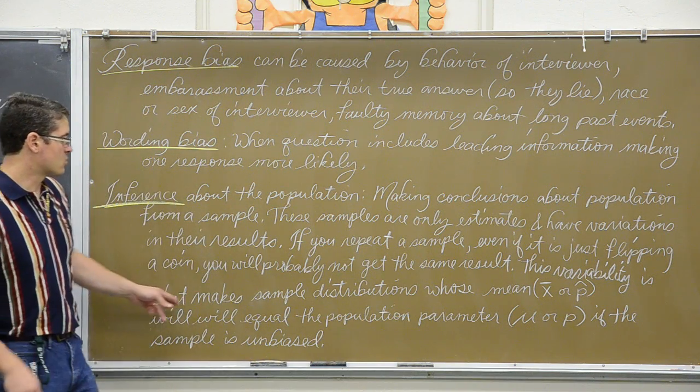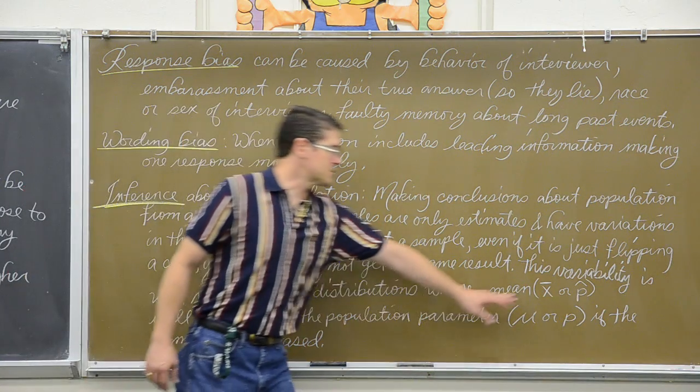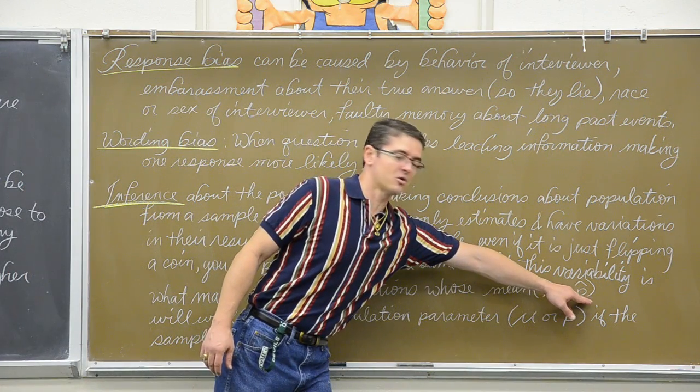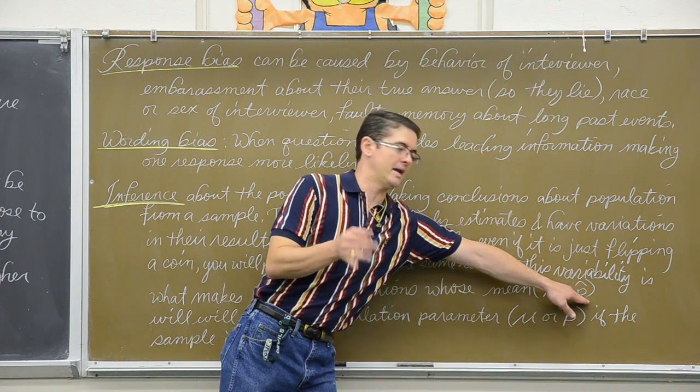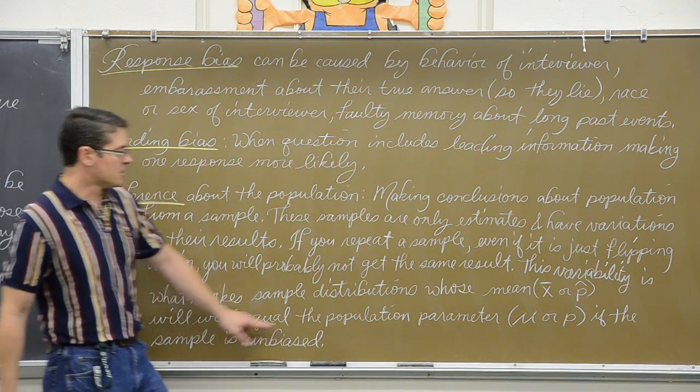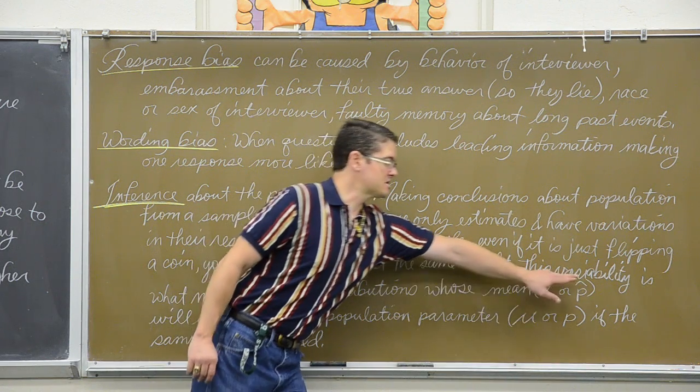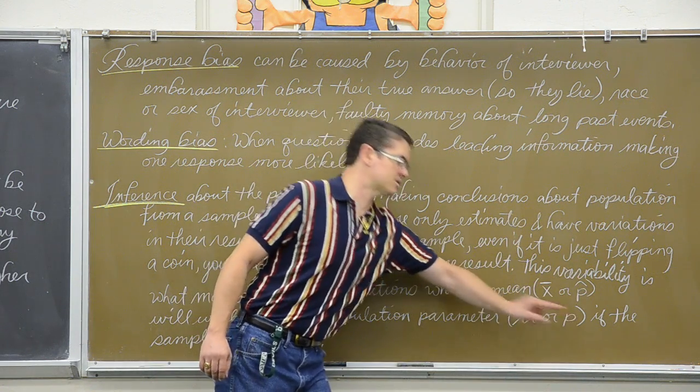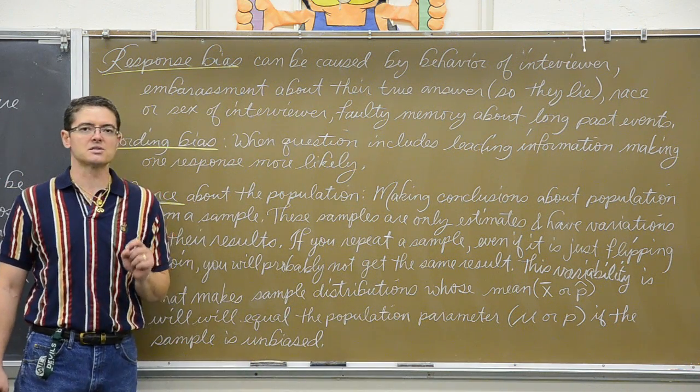That variability is what makes sampling distributions something we will talk a lot more about later. So the mean of your sample or the mean proportion, this would be like you flipping a coin 20 times and recording the percent of times you have heads. If unbiased, will be equal to the population mean, sample mean, population mean, sample proportion, population proportion, if the sample is unbiased.